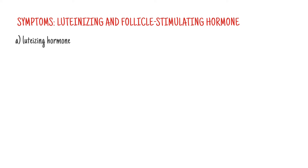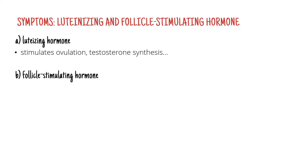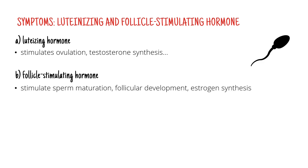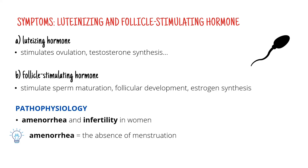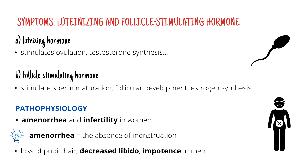Now the luteinizing and follicle-stimulating hormones. The luteinizing hormone stimulates ovulation, testosterone synthesis, and much more. The follicle-stimulating hormone is responsible for stimulating sperm maturation, follicular development, and estrogen synthesis. So if we cannot develop new oocytes and follicles, we're going to end up with amenorrhea — the absence of menstruation — and infertility in women. Men are going to suffer from loss of pubic hair, decreased libido, and even impotence.